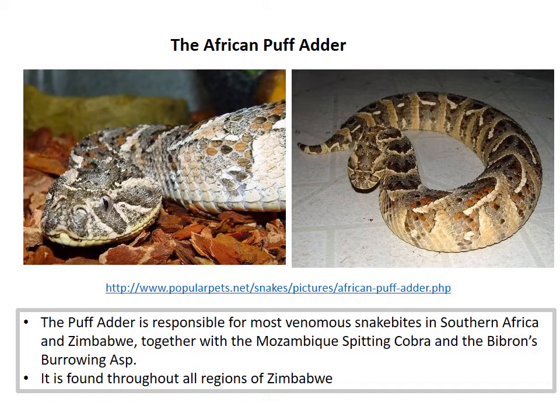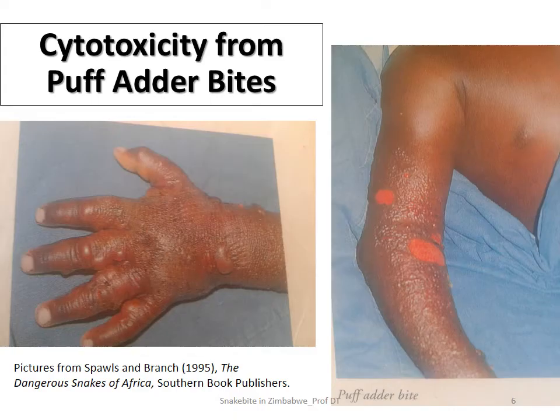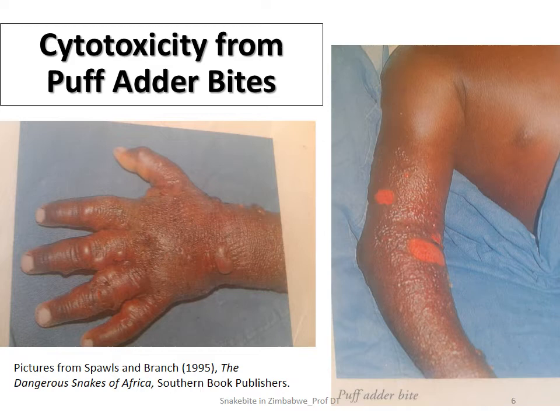One reason the puff adder causes so many bites is its coloration — brownish tones that are nearly invisible against savannah footpaths. They also have the habit of basking on footpaths, so unsuspecting people step on them and receive a nasty bite. A puff adder bite typically presents with smaller blisters alongside the other features of cytotoxic envenomation, as illustrated in pictures from the book 'Dangerous Snakes of Africa' by Spawls and Branch.